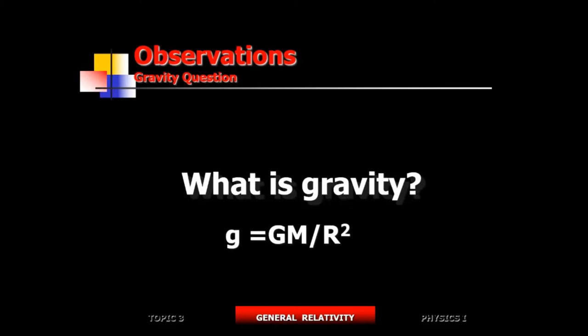But this doesn't really answer the question of why objects fall at the same rate. It doesn't provide any explanation — it's just an equation. It doesn't explain how falling rate is related to mass or to the size of a planet. That question is not answered by Newton's law.